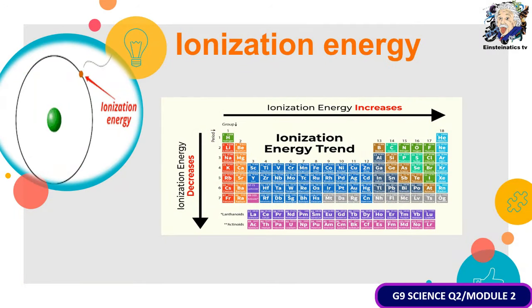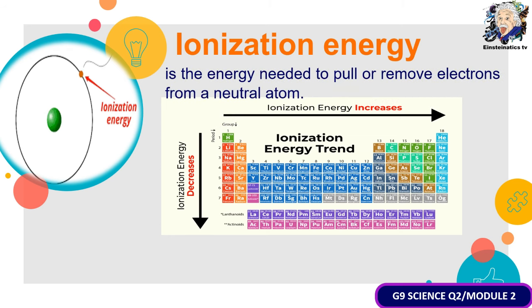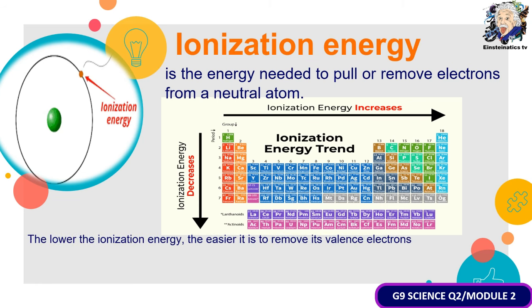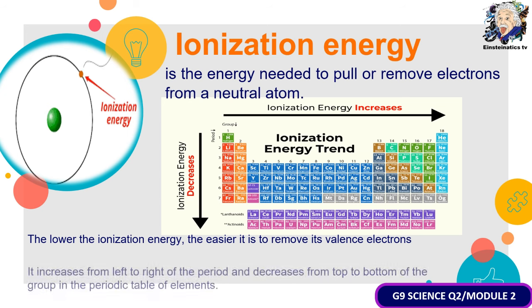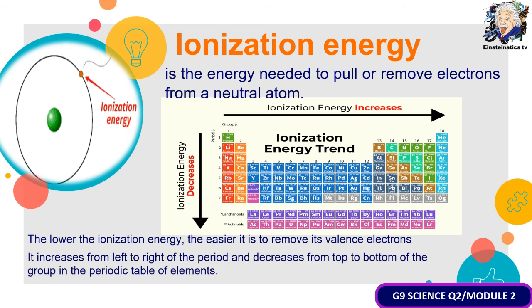The next key term is ionization energy — the energy needed to pull or remove electrons from a neutral atom. Just like electronegativity, it increases from left to right and decreases from top to bottom. Remember: the lower the ionization energy, the easier it is to remove valence electrons. The higher the ionization energy, the more energy is needed to remove valence electrons.